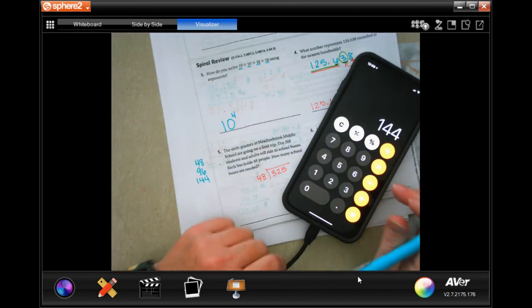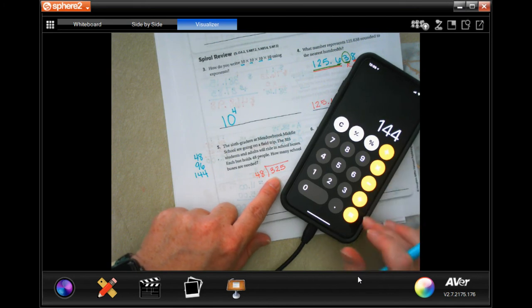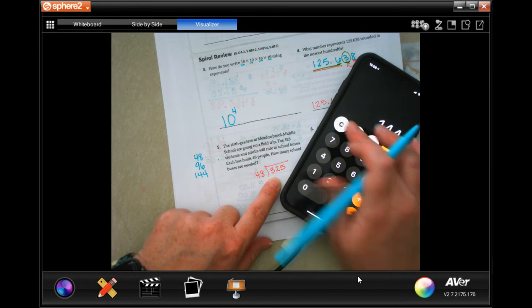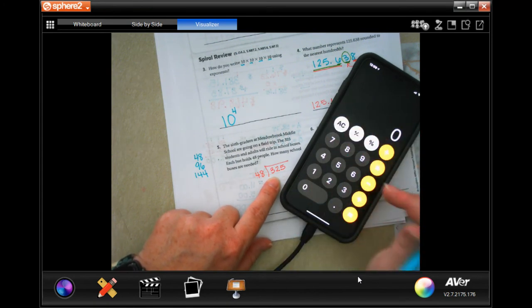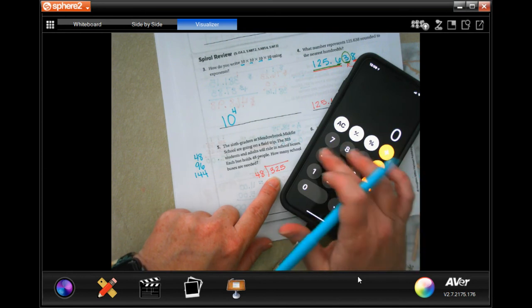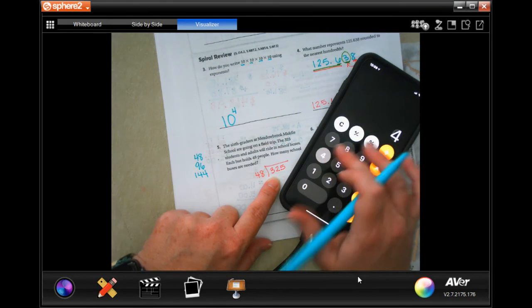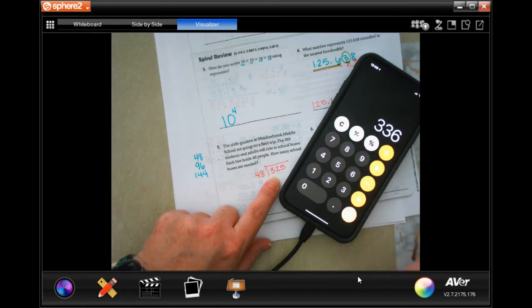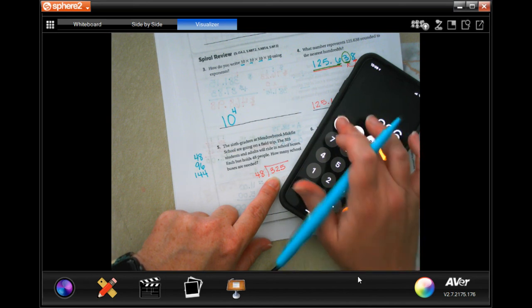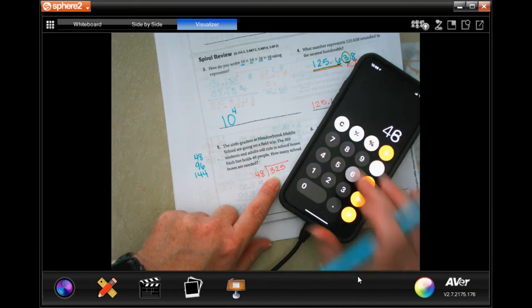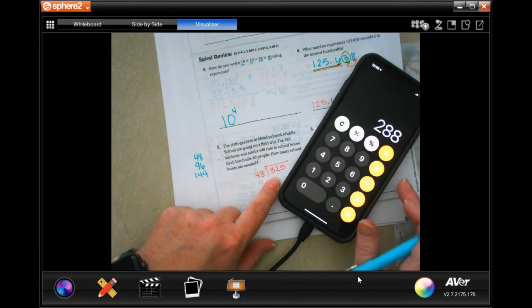We need to get all the way up to 325, so I'm going to go ahead and go further up. Let's do 48 times 6, that's 288, so not quite. 48 times 7 is 336, so maybe it was 6. So let's go 48 and 6, which is 288.